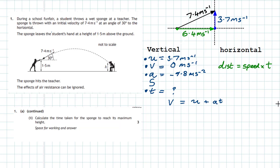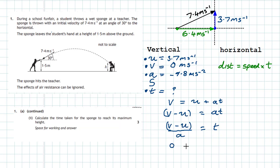We have U, V, and A, so we use the equation V = u + at. Rearranging to find time: t = (V − u) / a. Plugging in the numbers: final velocity is 0, initial vertical velocity is 3.7, divided by minus 9.8. Do that in your calculator and you get a time of 0.38 seconds. That projectile took 0.38 seconds to reach its maximum height.